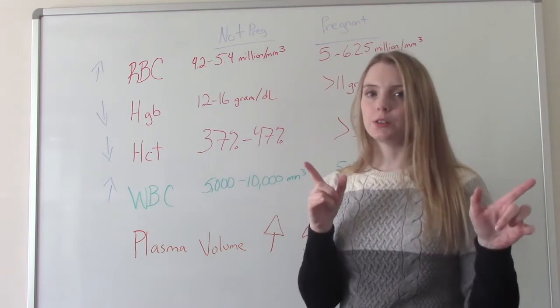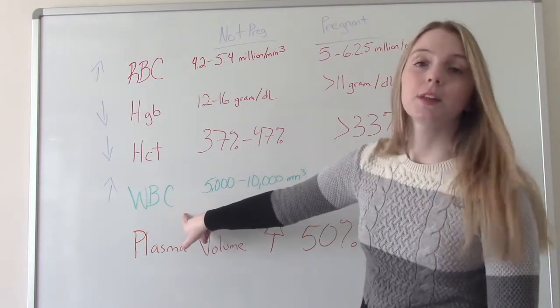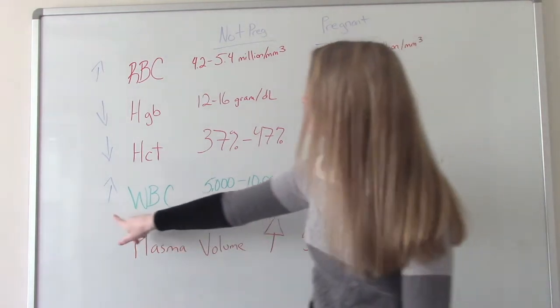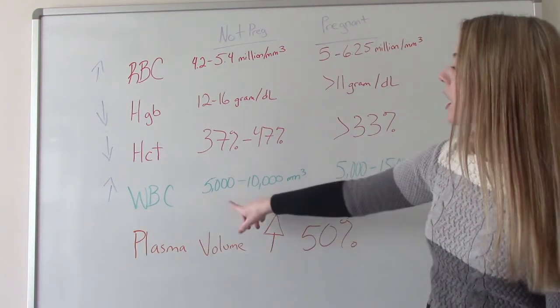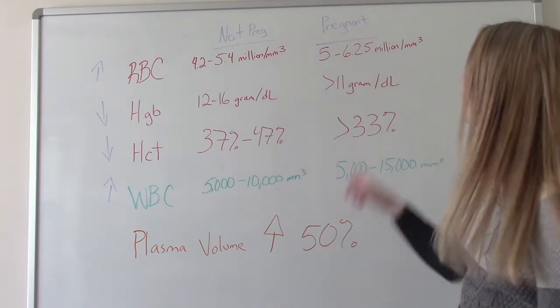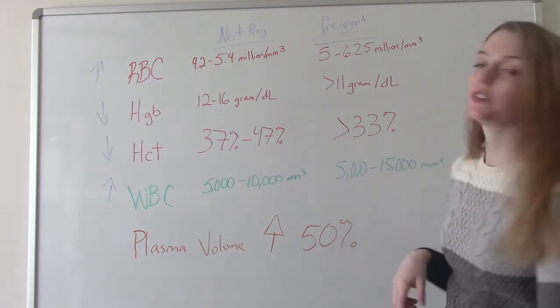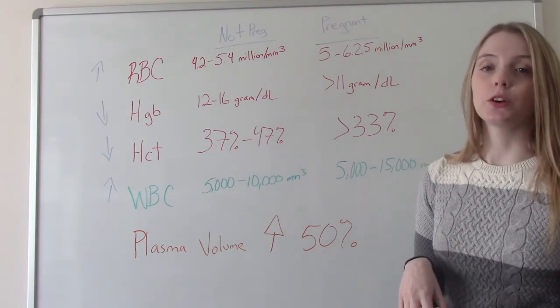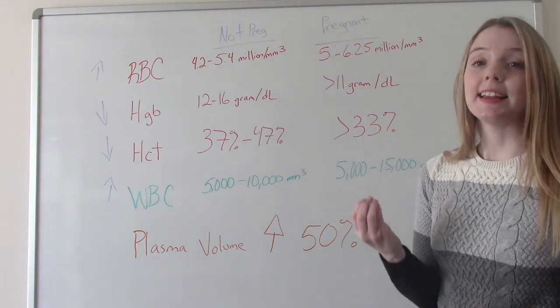Some other things we also want to check are our white blood cell count. So you'll see this is also increased. When we're not pregnant, our white blood cell count is roughly 5,000 to 10,000. And when we become pregnant, it can go as high as 15,000. And that's still considered normal. And why is that?